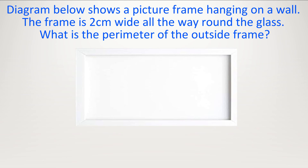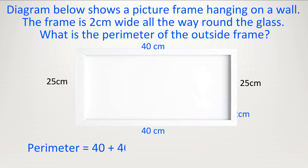The diagram below shows a picture frame hanging on a wall. The frame is 2 centimeters wide all the way around the glass. What is the perimeter of the outside of the frame? We have 36 going along but it's 2 centimeters wide on the left and right, so all the way along is 36 plus 2 plus 2 equals 40 centimeters. 21 centimeters is going up but we've got 2 centimeters at the top and bottom, so 21 plus 2 plus 2 equals 25. Along we have 40 and 40; going down we have 25 and 25. So 40 plus 40 equals 80, plus 25 plus 25 equals 50: 80 plus 50 equals 130.